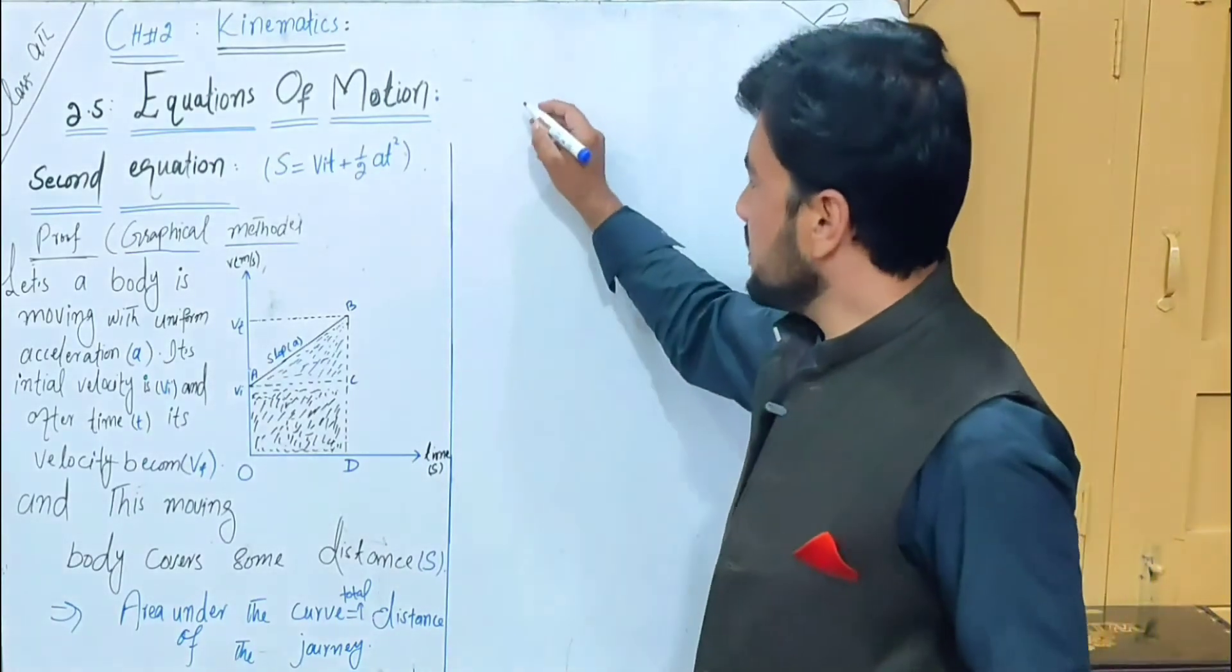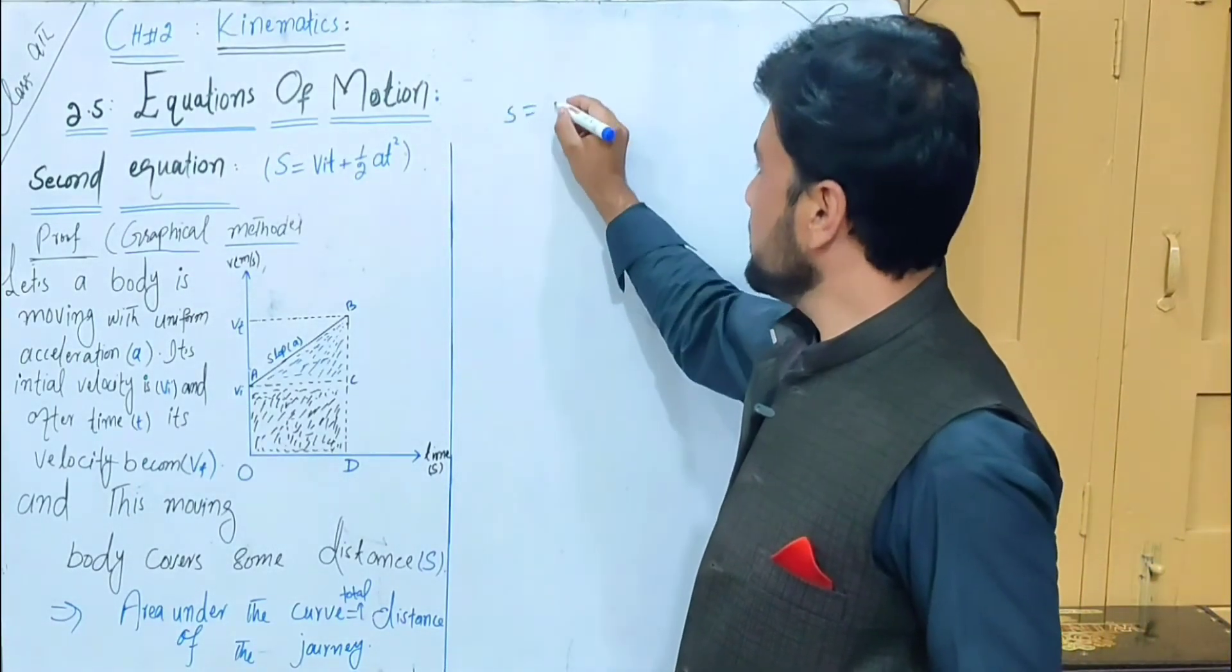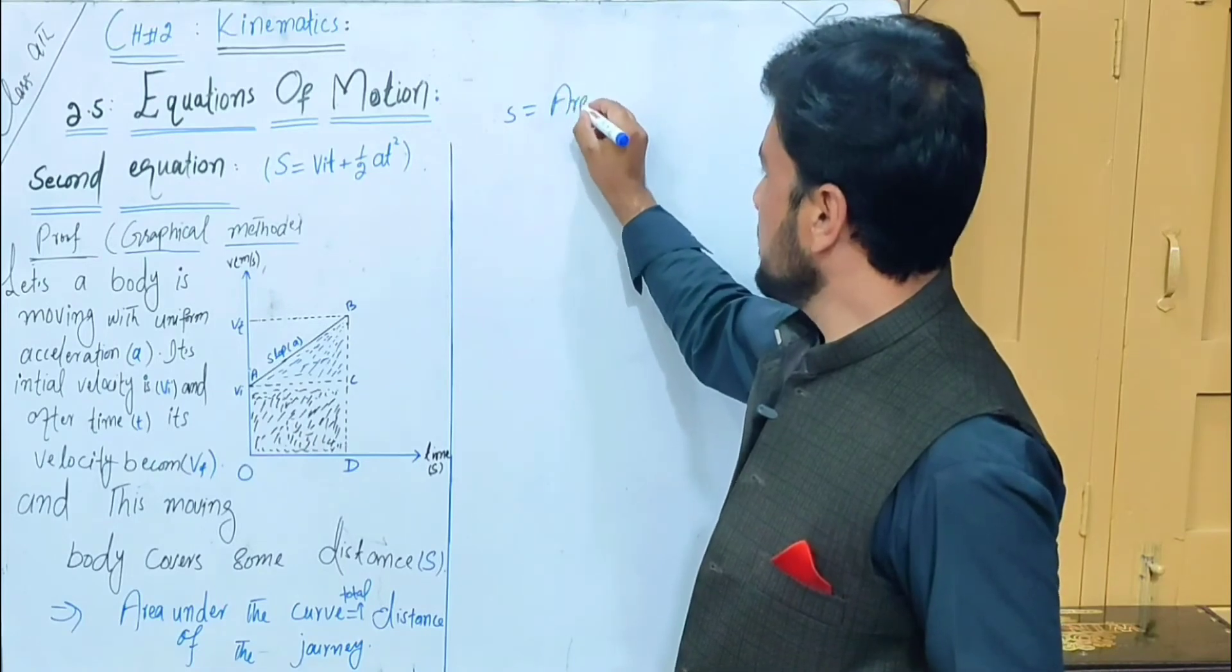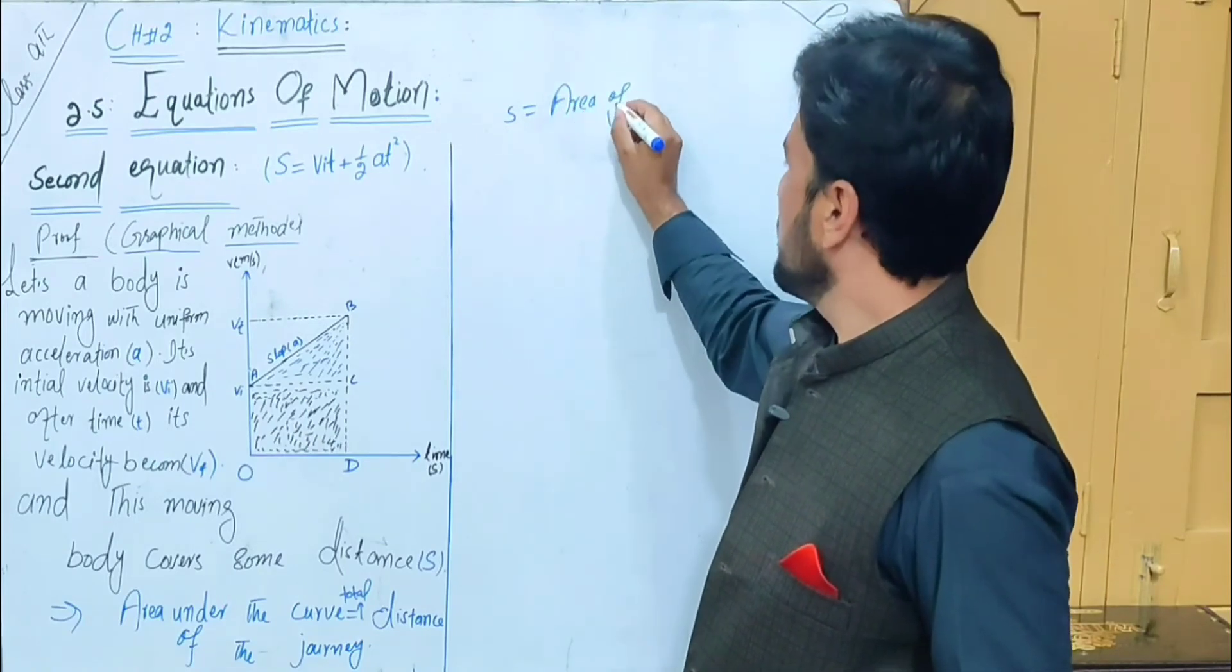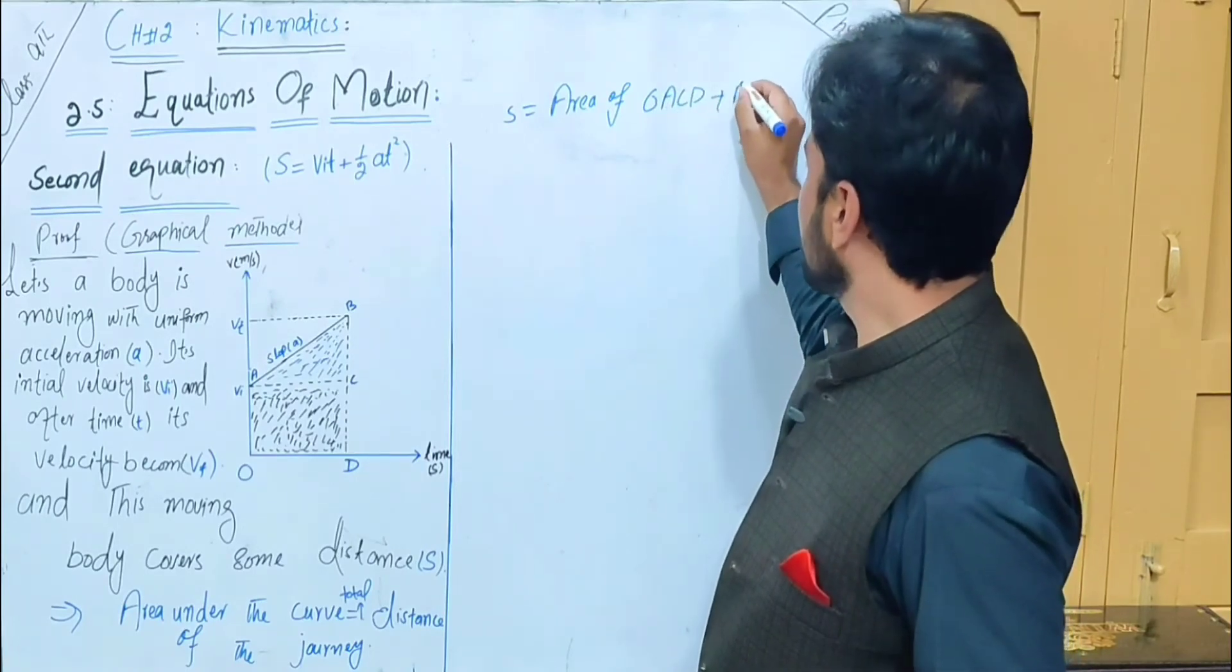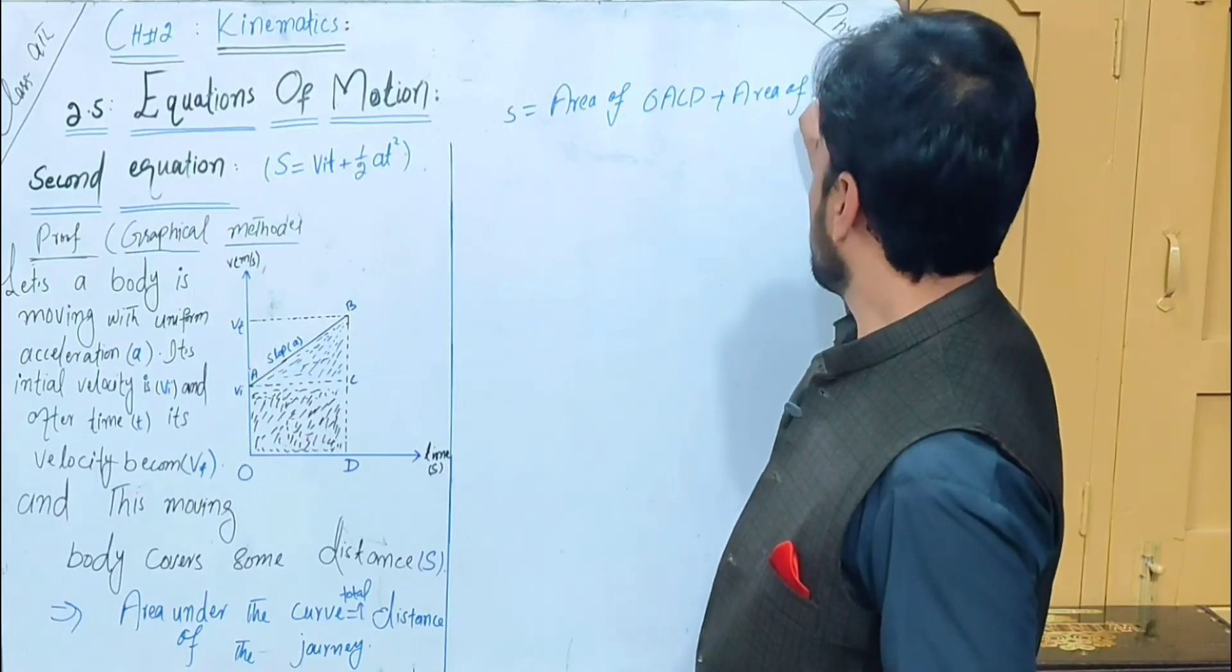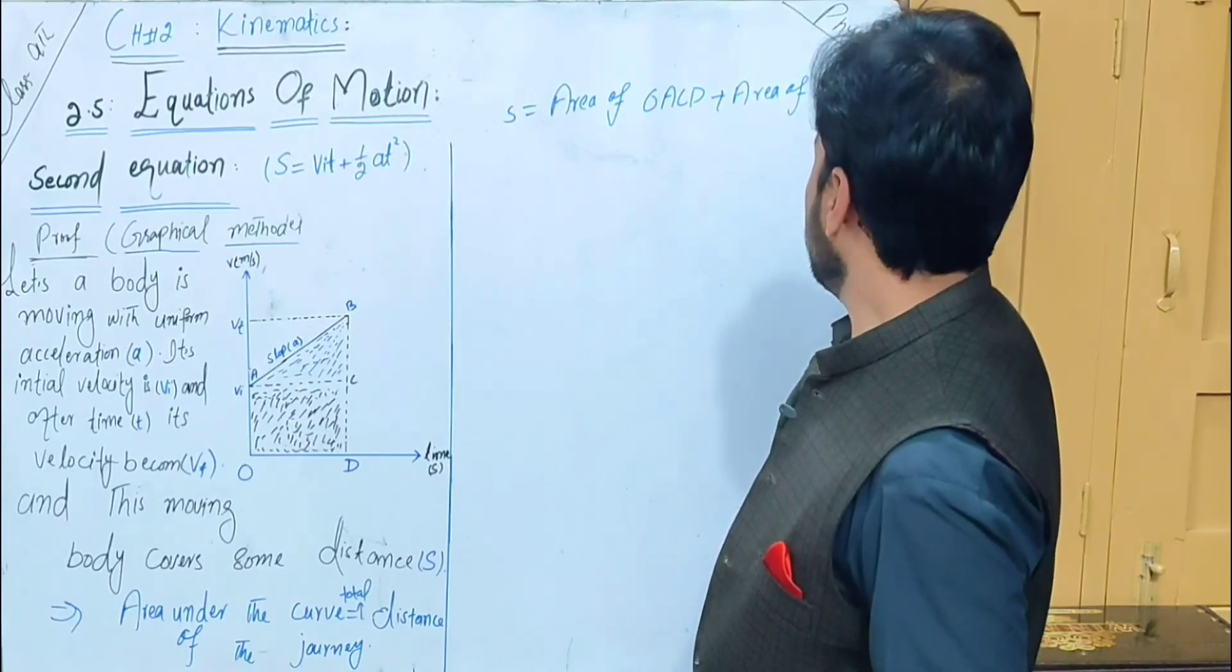The total distance s will be equal to the area of shape OACD plus the area of triangle ABC.